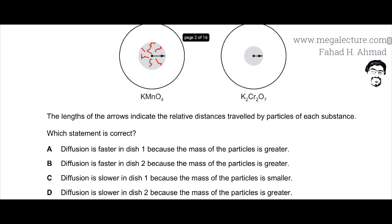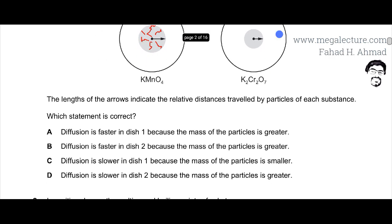So going back to our statements, the correct statement: diffusion is faster in dish 1, that's correct, because the mass of the particle is greater. No, because the mass of the particle is lesser. It's lighter. So the first statement is incorrect.